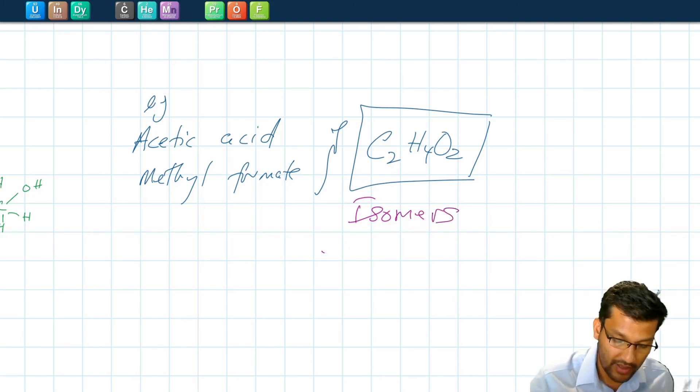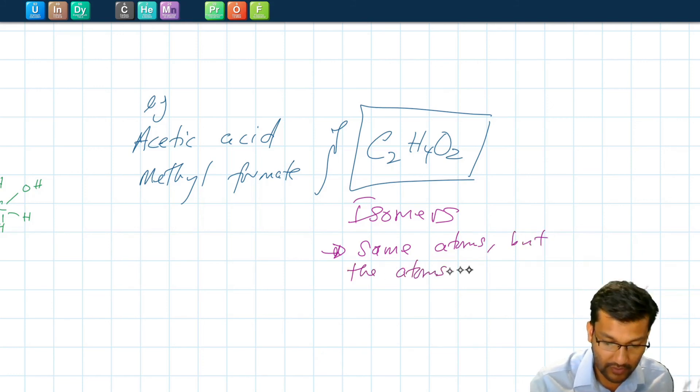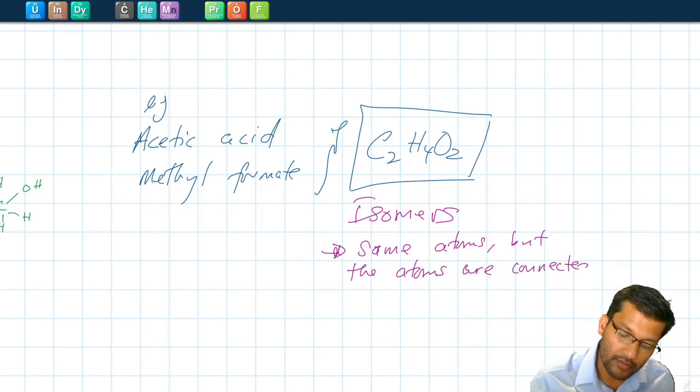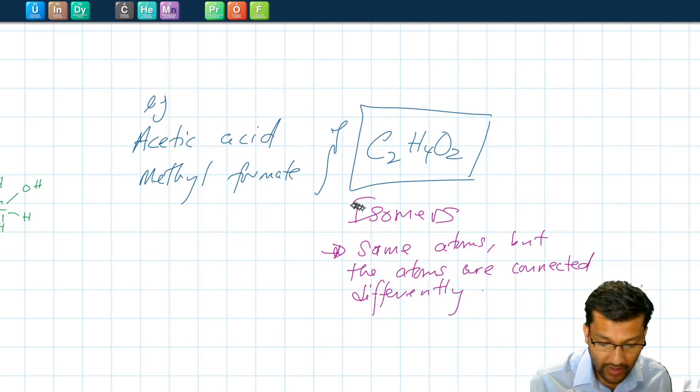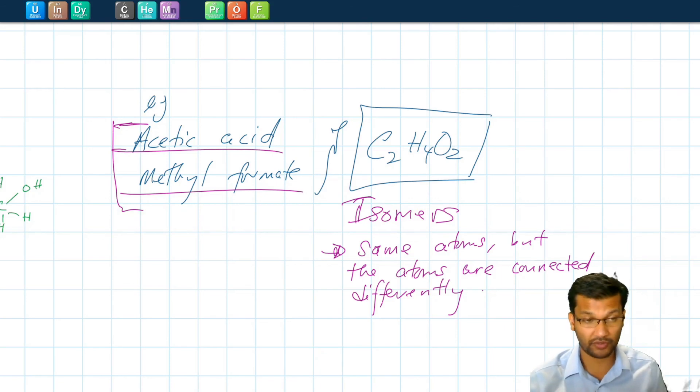Isomers have the same atoms but the atoms are connected differently. So if you look up, you can look up the structures of acetic acid and methyl formate and they're both included in your textbooks to see how their structural formulas are different.